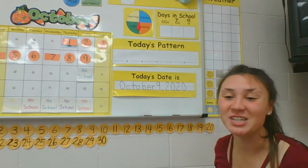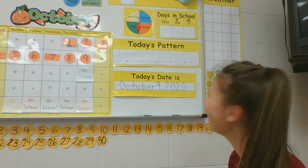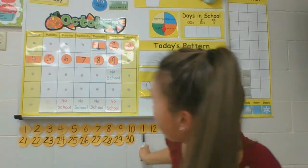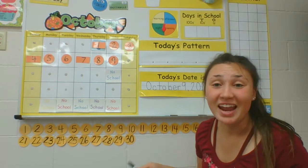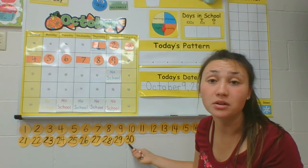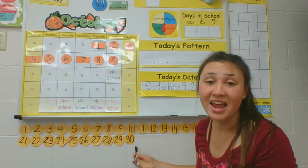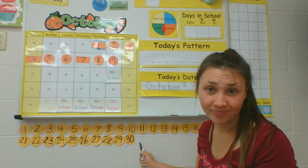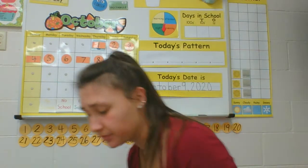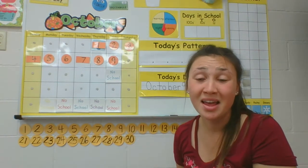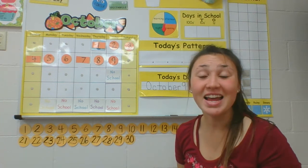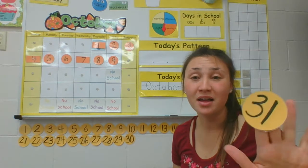We're going to move on to the number line for our days in school. How many days in school are we at now? Yesterday we had 30 days of school, so today we're going to have 31 days of school. What two numbers make up 31? Yeah, a three and a one makes 31.